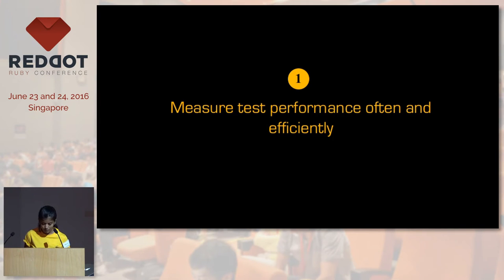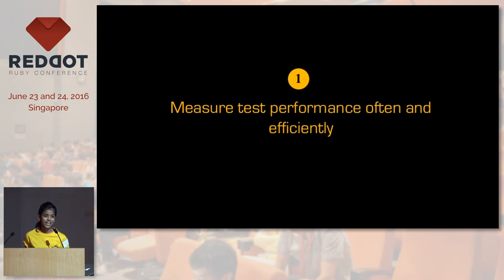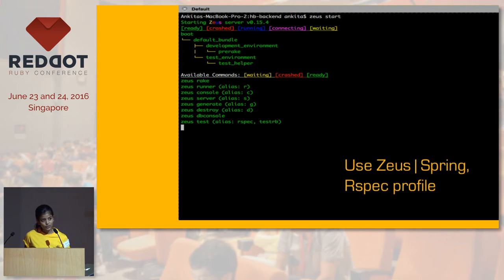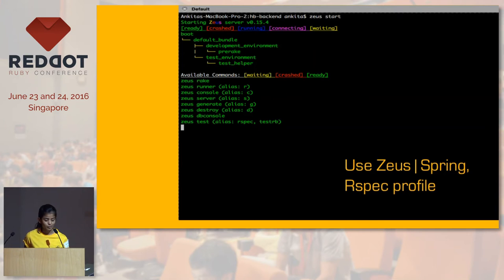In order to know whether your tests are slow or fast, the first thing is to measure them, and the process of measurement has to be painless and efficient. This is where I really recommend you try Zeus or Spring. In Rails, every time you run your test, you have to wait for your Rails environment to load every single time — you don't only wait for your tests but also for your Rails environment, which is unnecessary. What Zeus does is allow you to load your environment once and for all, and then you can keep running your test cases.